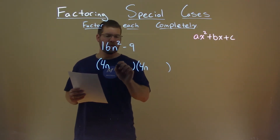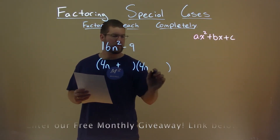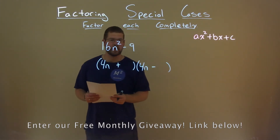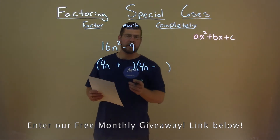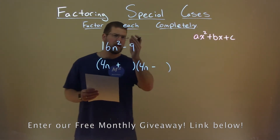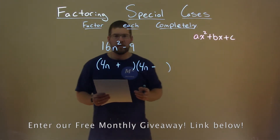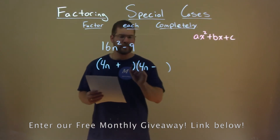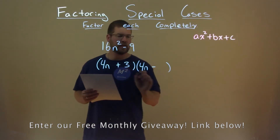Since there's no b value, if we do this, there's a plus and minus right here. Now we look at the 9 — what's the square root of 9? Well, that's going to be 3.